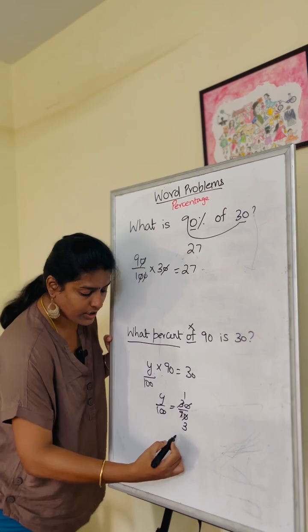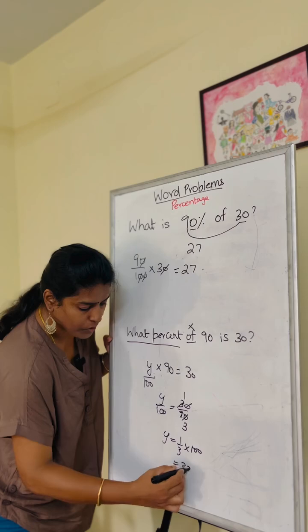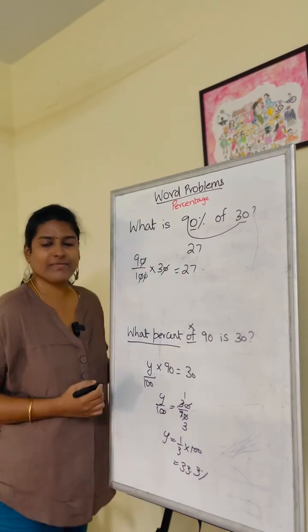1 by 3 is nothing but 1 by 3 times 100. So it is 33.3 percent. That's it.